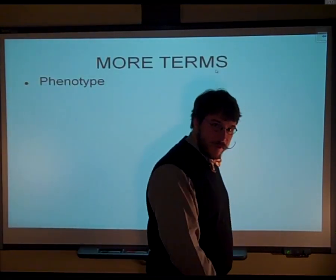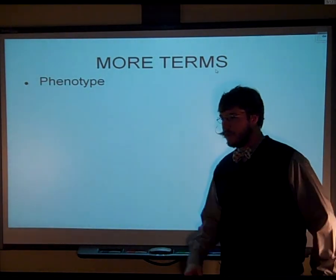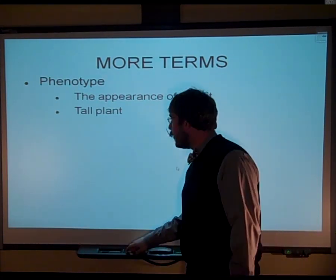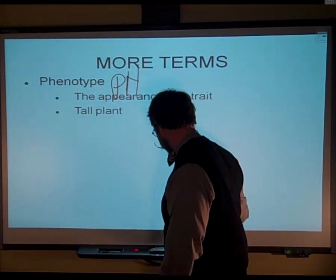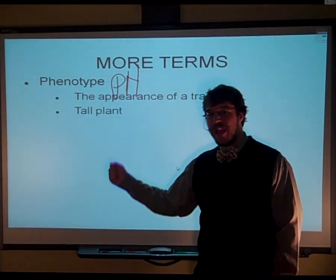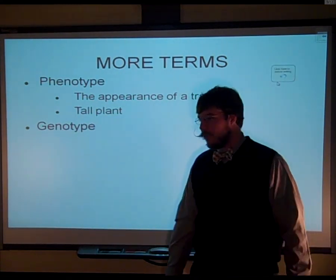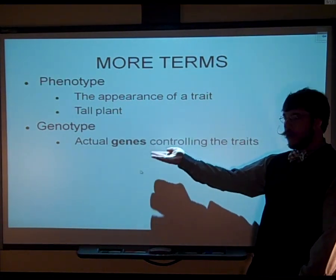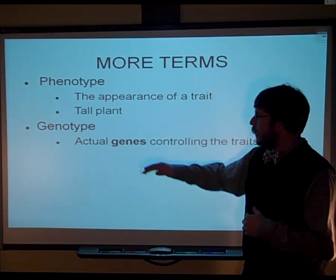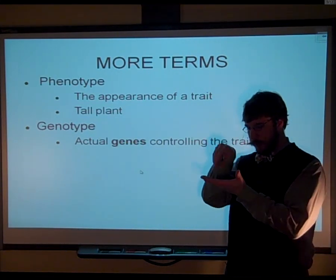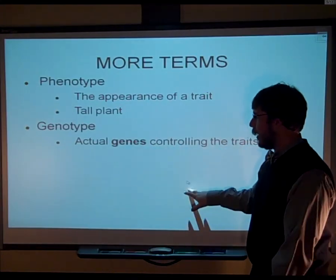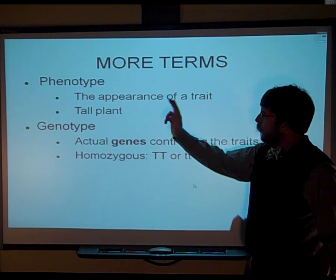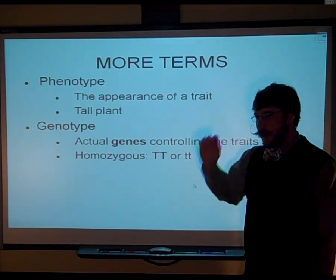We need to throw some more terms at you before we continue. First term: phenotype. You need to know that the phenotype is the physical appearance of the trait. And then there's also the genotype — these are the actual alleles or genes that are controlling those traits. This is what you don't see unless you could get down into the DNA and actually look at the gene.